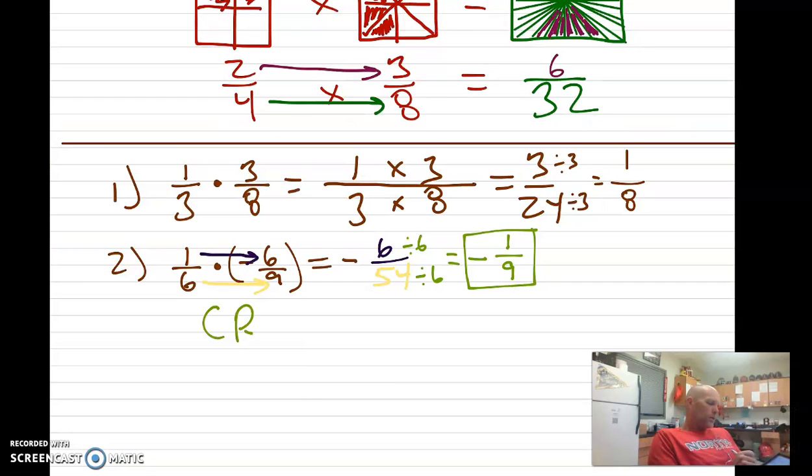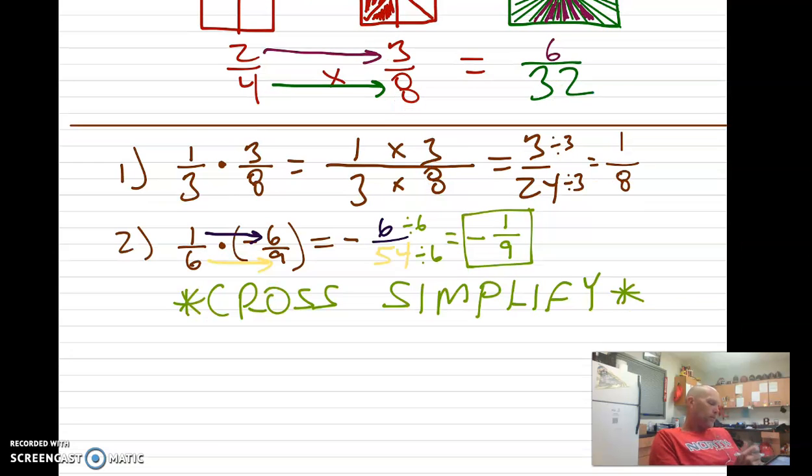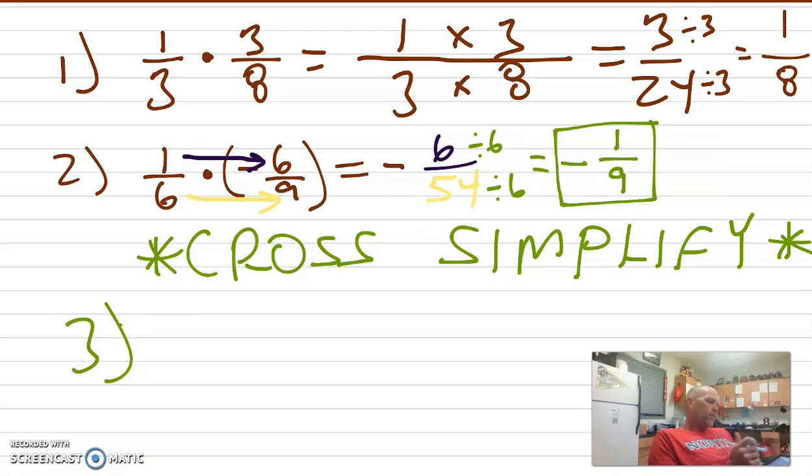So that's negative 1 ninth. So we can also, what's called, cross-simplify. Some of you will like this a lot. So before we get a problem, you know what, let's look, we're going to do, we're going to do number 2 again, okay? Except for we're going to call it 3. So if we cross-simplify, when you have a problem that is multiplying, watch this. I'm going to take 1 sixth, and we're multiplying it by a negative 6 ninths, right? Alright, we already know our answer is negative.